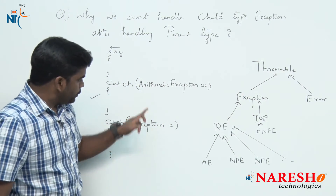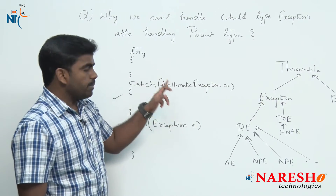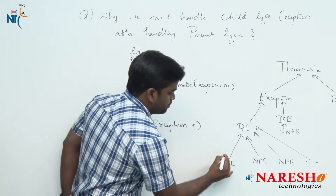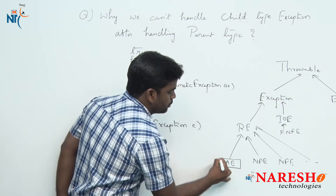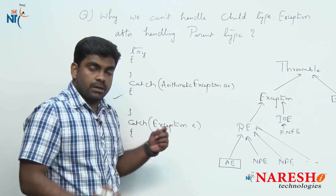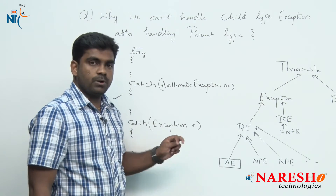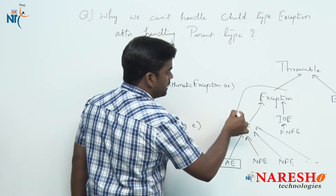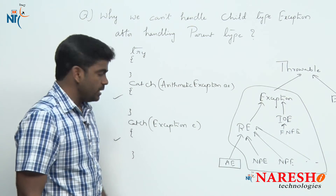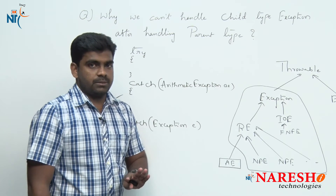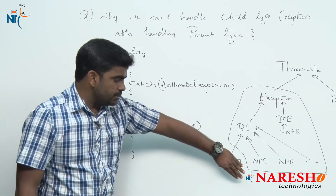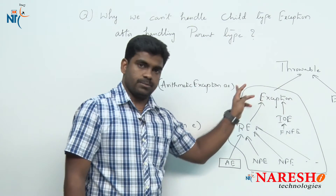Now if you try to handle ArithmeticException first, at compile time the compiler sees you are clearly specifying ArithmeticException. Then when you specify Exception as the second catch, the compiler binds it to all remaining classes in the hierarchy except ArithmeticException — so ArithmeticException is excluded from the second catch block.